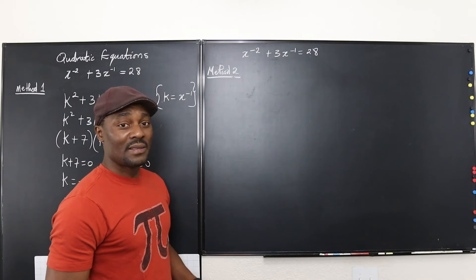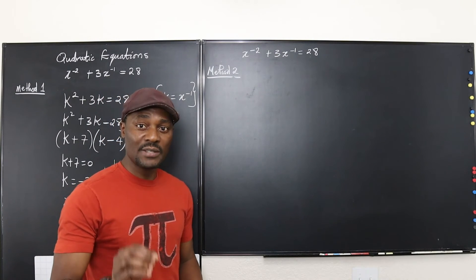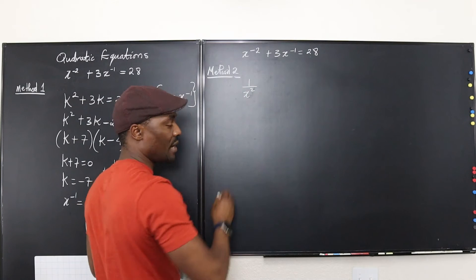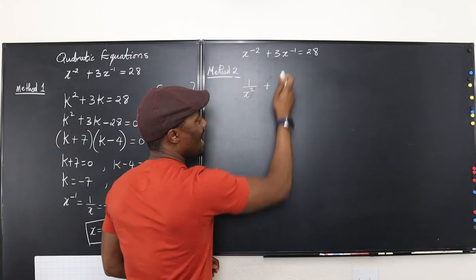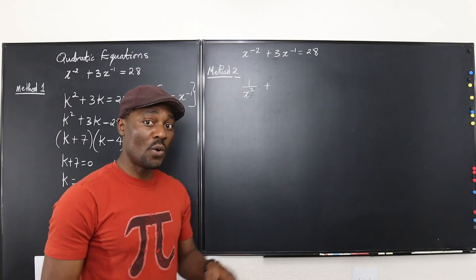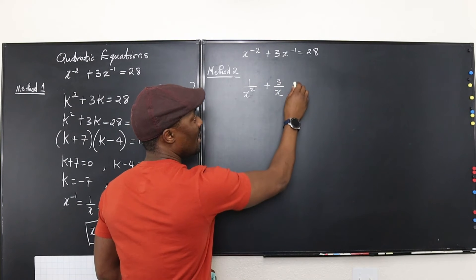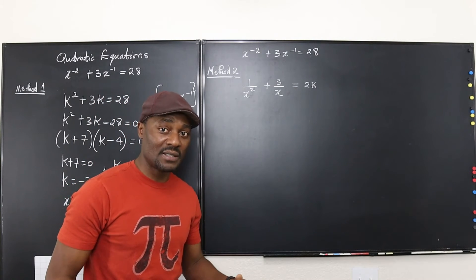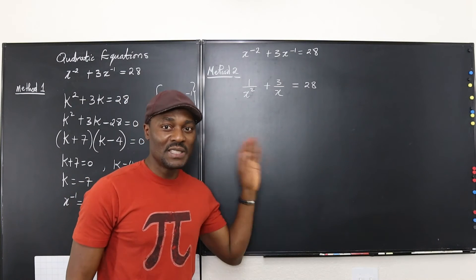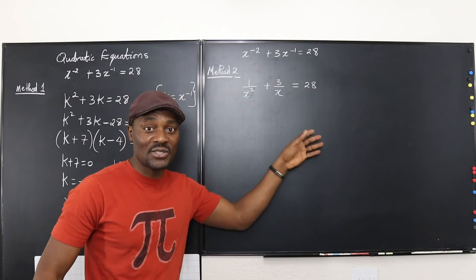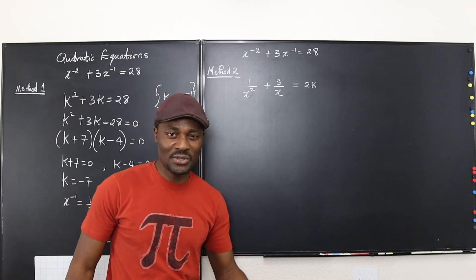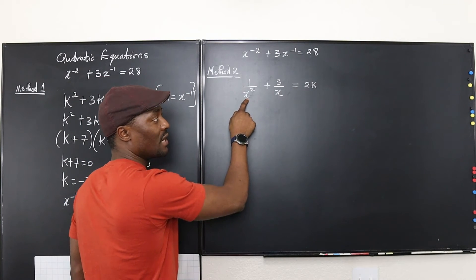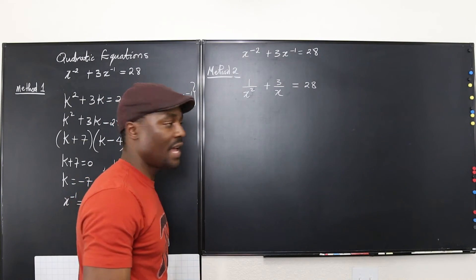So now I'm going to use another method where I will not do any substitution, but I will recognize from the beginning what this expression actually means. x^(-2) is the same thing as 1 over x^2. Plus 3 times x^(-1) is the same thing as 3 times 1 over x, which is the same thing as 3 over x. And I have 28 on the other side. So whenever you have rational expressions added or subtracted together in an equation, you want to get rid of the denominators. So what's the least common denominator here? It's x^2. So I'm going to multiply each of the terms by x^2.